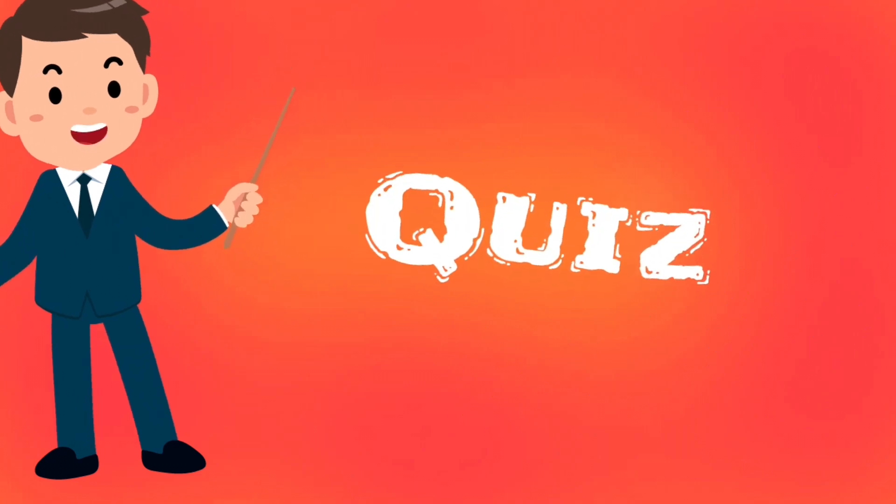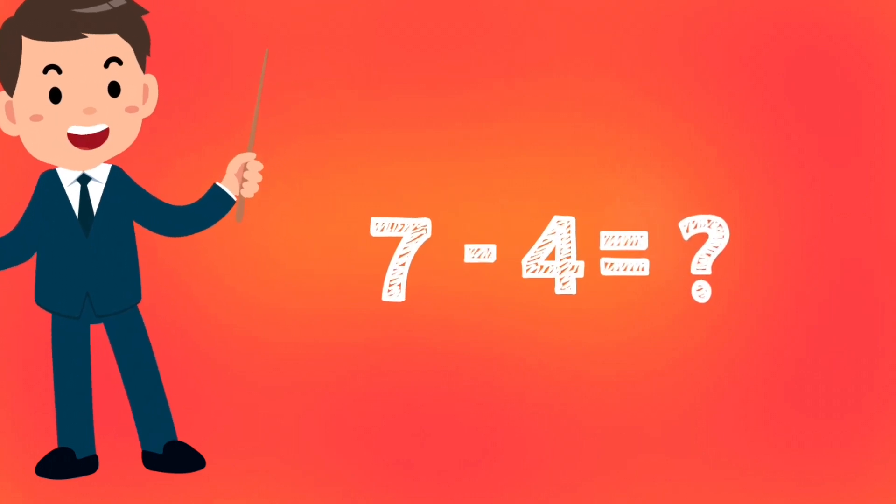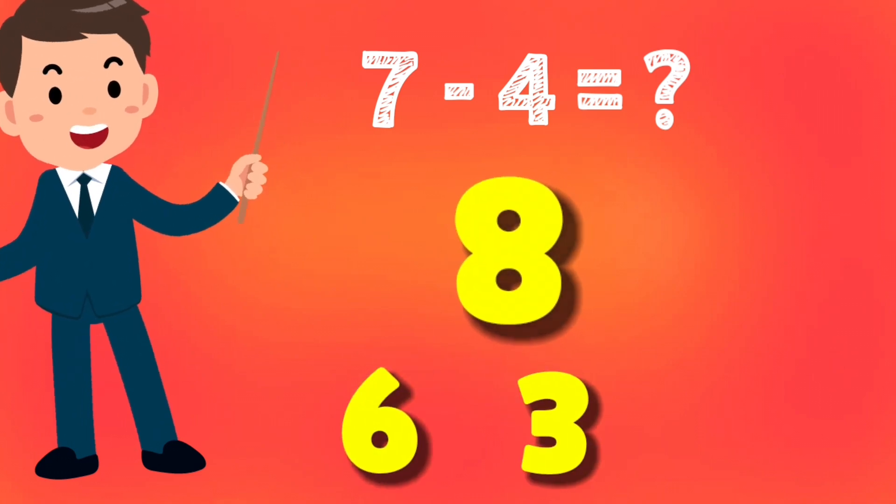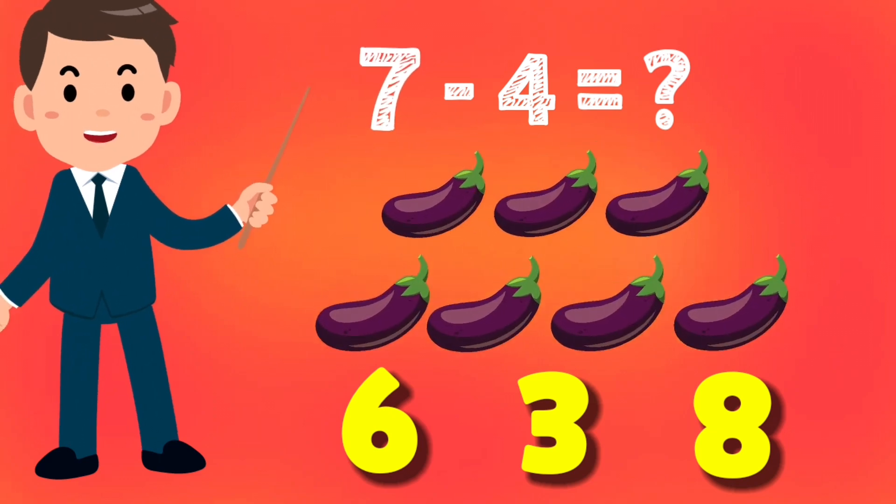Now let's take a quiz and solve it together. Our first question is 7 minus 4 equals how much? Is it six, is it three, or is it eight? Let's find out. Seven eggplants minus four eggplants.